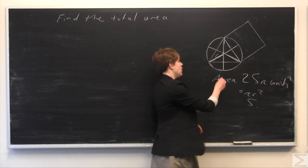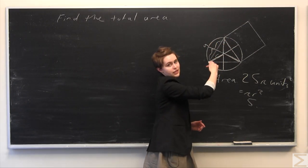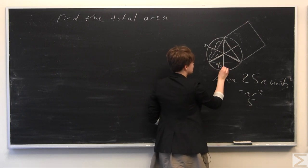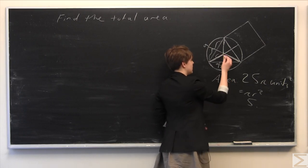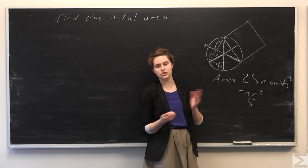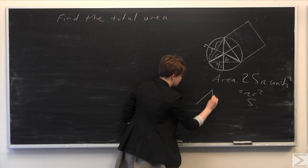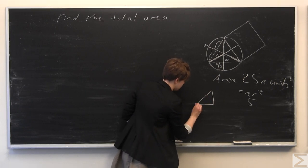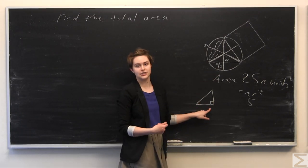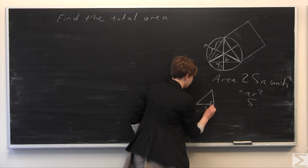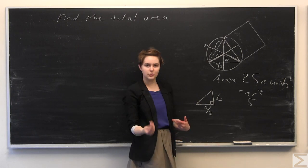We want this entire side length, which we'll call a — the full length of the side of the equilateral triangle. Each of the half-sides will be a/2. We'll call the other leg b. We know that each one of these triangles is a 30-60-90 triangle, where the bottom leg is a/2, the other leg is b, and the hypotenuse is r, which equals 5.